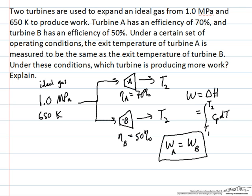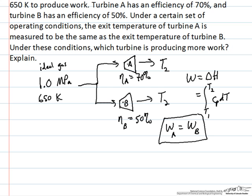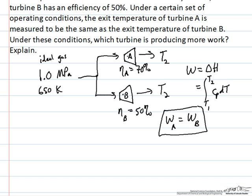But the question arises, how can it be that the more efficient turbine and the less efficient turbine are producing the same amount of work? And that basically has to do with the fact that not all of the variables are the same in the final state.